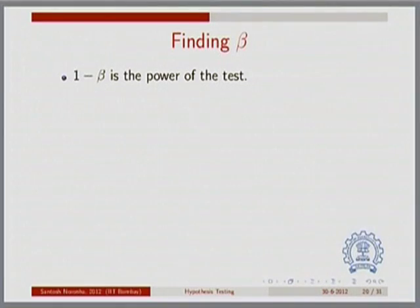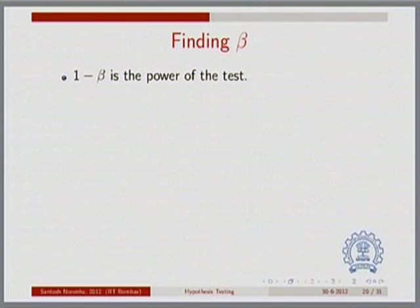We clearly want to reduce the value of beta. In other words, we want to have a large value for 1 minus beta, and this 1 minus beta is referred to in the statistical literature as how powerful your hypothesis testing analysis has been — so, how powerful is the test.